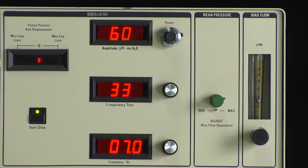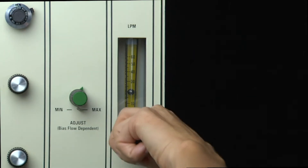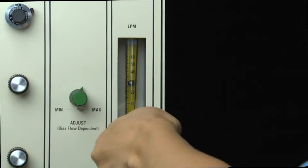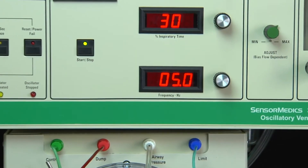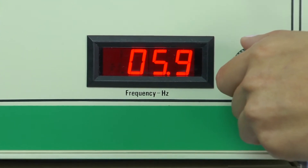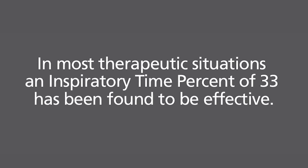The controls for bias flow, frequency, and inspiratory time percent are rarely changed during the course of treatment. Typically, the bias flow is maintained within the range of 25 to 40 liters per minute. In practice, as patient size increases, starting frequency is decreased. For adult populations, frequency is typically initiated at 5 to 6 hertz. Although some cases may benefit from an inspiratory time percent of 50, in most therapeutic situations an inspiratory time percent of 33 has been found to be effective.